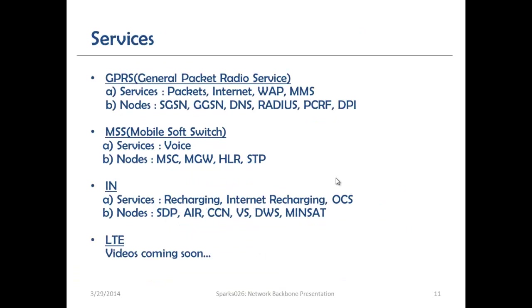Now let's look at the services that connect via the network backbone. Network operators and organizations prefer a centralized or consolidated backbone network where different product lines connect through. Services found in the network today — whether telecom or IT — include GPRS, General Packet Radio Service, covering packet transfer, internet, WAP, MMS, and browsing. Based on 3GPP standards, relevant nodes include the SGSN — Serving GPRS Support Node — and the GGSN — GPRS Gateway Support Node — as well as DNS, Radius, PCRF, and DPI, which is Deep Packet Inspection.